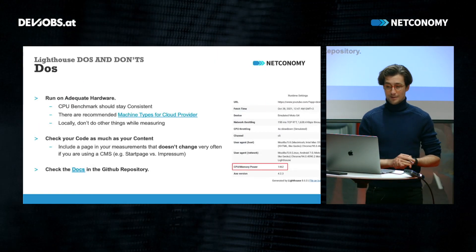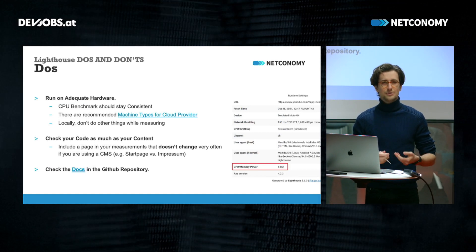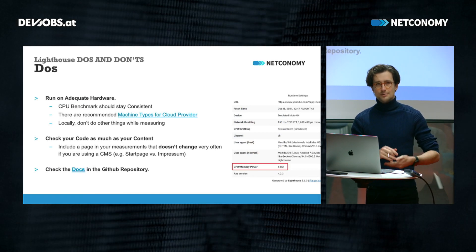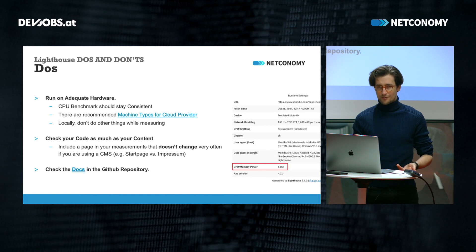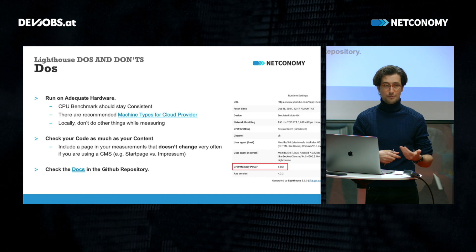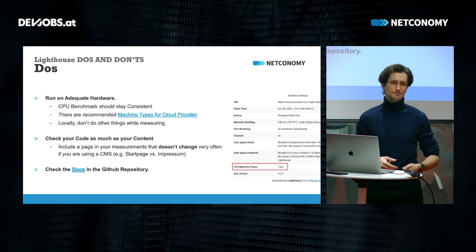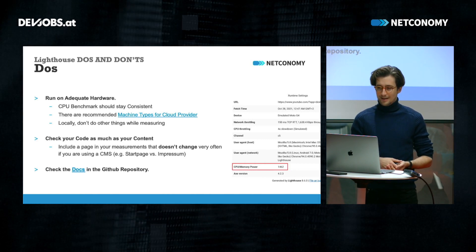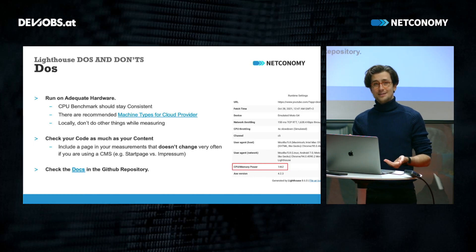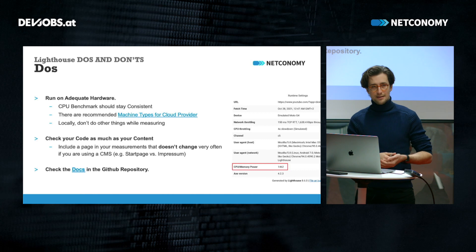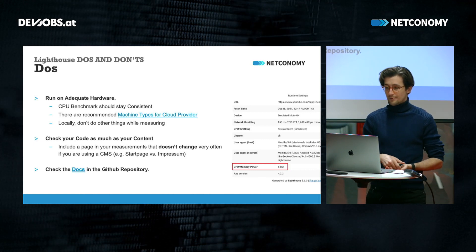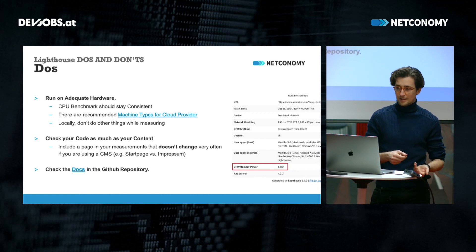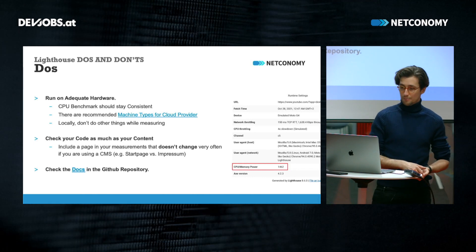First, run on adequate hardware. As a developer, measuring things on your big and beefy developer computer will likely give you better results, no matter how much Lighthouse throttles the test in the background. And if you're doing processor-heavy tasks, or maybe you're in a Zoom meeting with screen share enabled, and you run Lighthouse, you might get significantly different results. So if anything, scroll down your Lighthouse report — you'll find a CPU benchmark there. Lighthouse measures the power of your machine, and that benchmark relates to your results. So be careful with that.